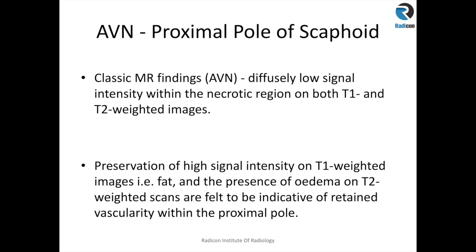If there is preservation of high signal intensity on T1 weighted images — that is fat signal — it usually means that some vascularity is preserved. So the more fat signal is present, the greater the chance that the proximal pole of the scaphoid is viable. As we know, the vascular supply to the scaphoid comes from the distal pole, so the proximal pole is at increased risk of AVN if there is disruption to the vascular structures in the presence of a scaphoid waist fracture.